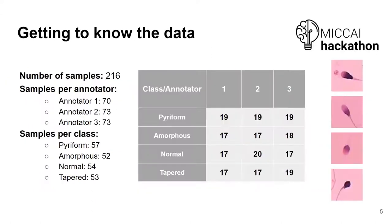Before going to the experimental process, I will introduce our problem. We have a multi-class classification problem — sperm morphology classification — where we have only 216 images, each annotated by one of three annotators.